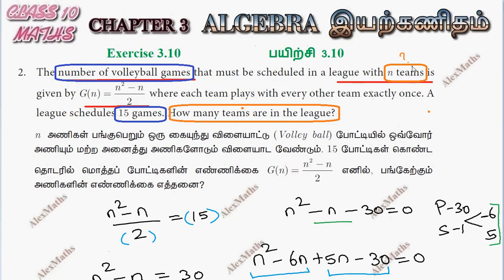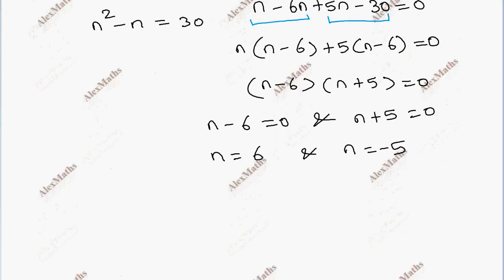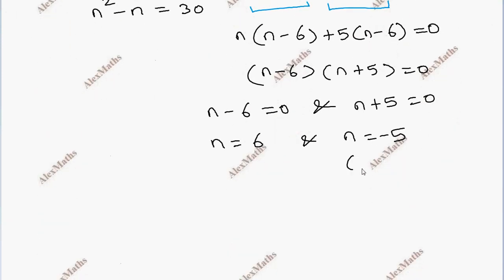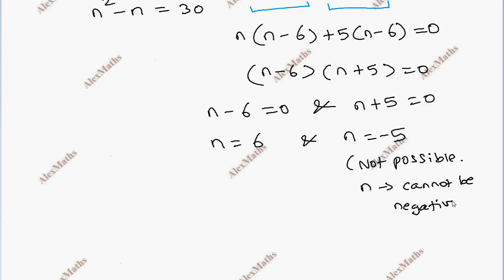Since the number of teams cannot be negative, n equals minus 5 is not possible. Therefore n cannot be negative, and the final answer is n equals 6. The number of teams in the league is 6.